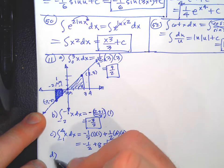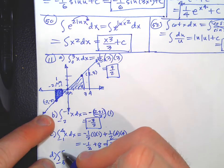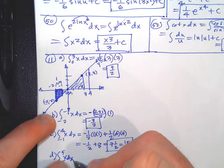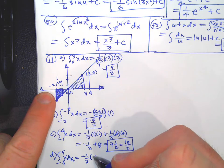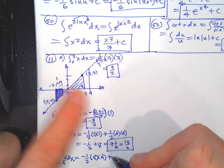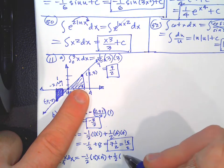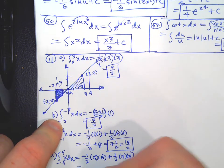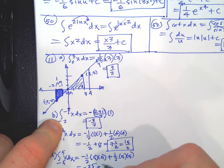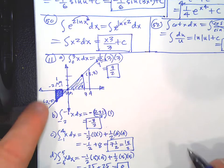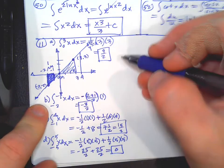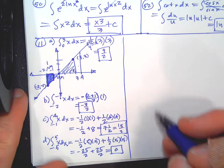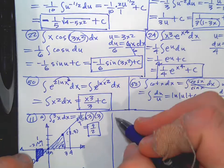Part d integrates from -5 to 5 of x dx. The triangle on the left has base 5 and height 5 — it's negative 25/2. The triangle on the right has base 5 and height 5 — it's positive 25/2. They cancel: negative 25/2 plus 25/2 equals zero. You shouldn't be surprised — two triangles the same size, one negative and one positive, cancel each other out.